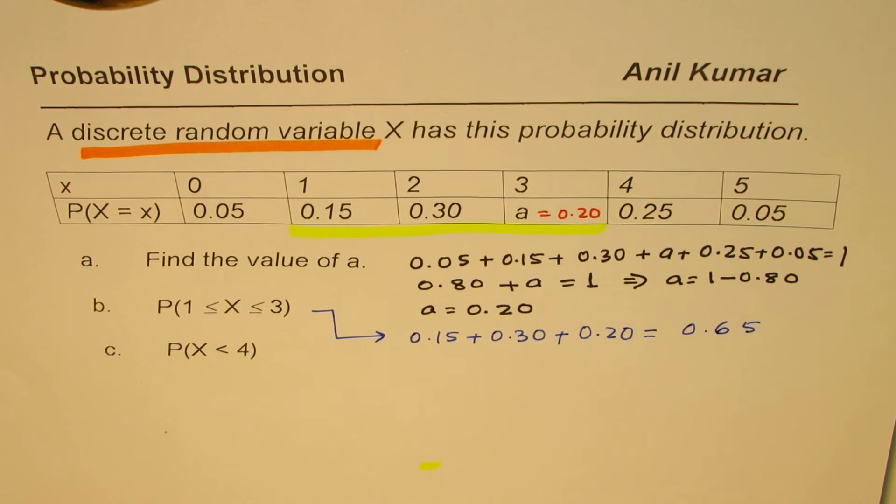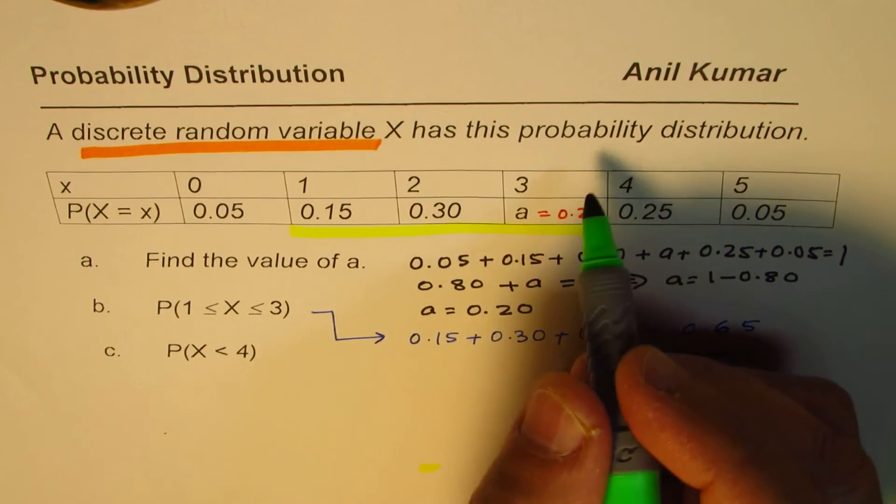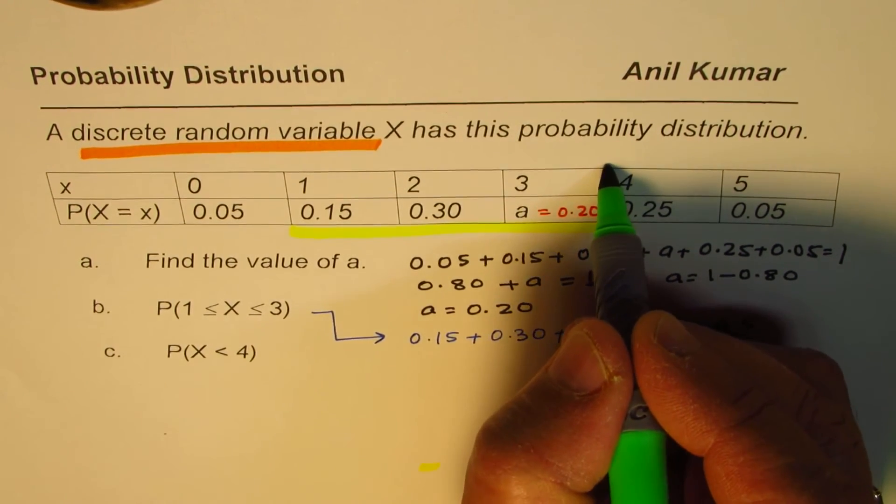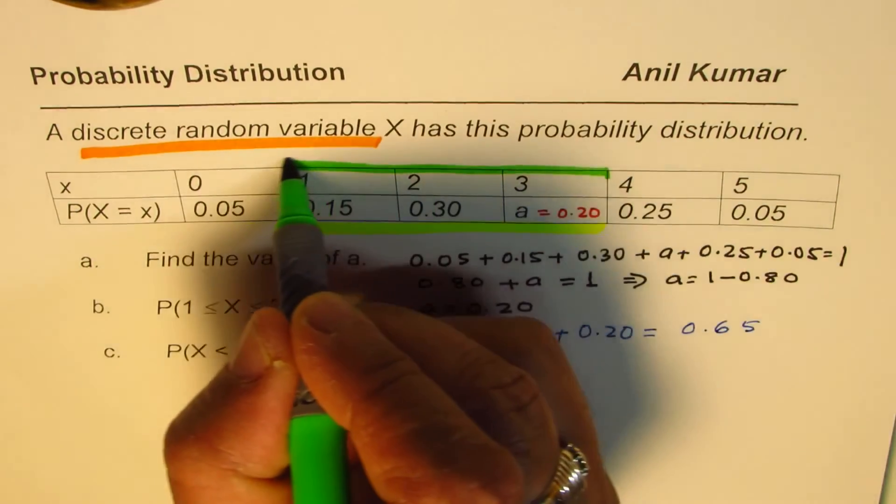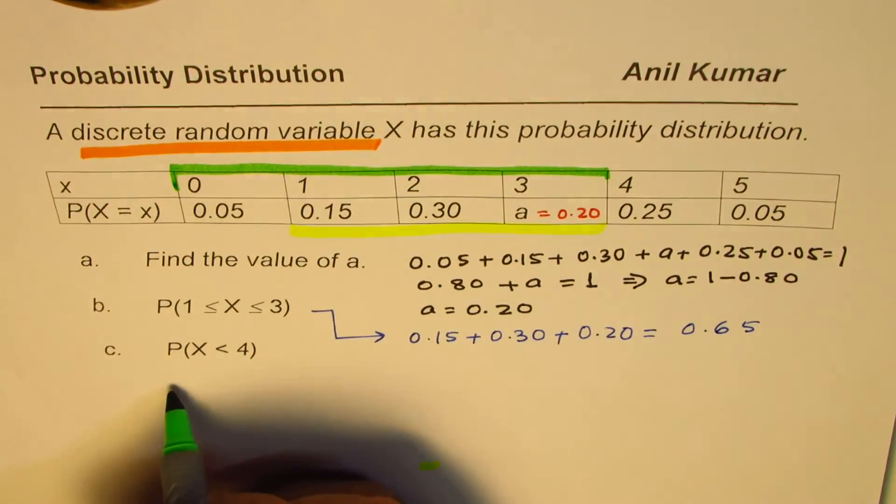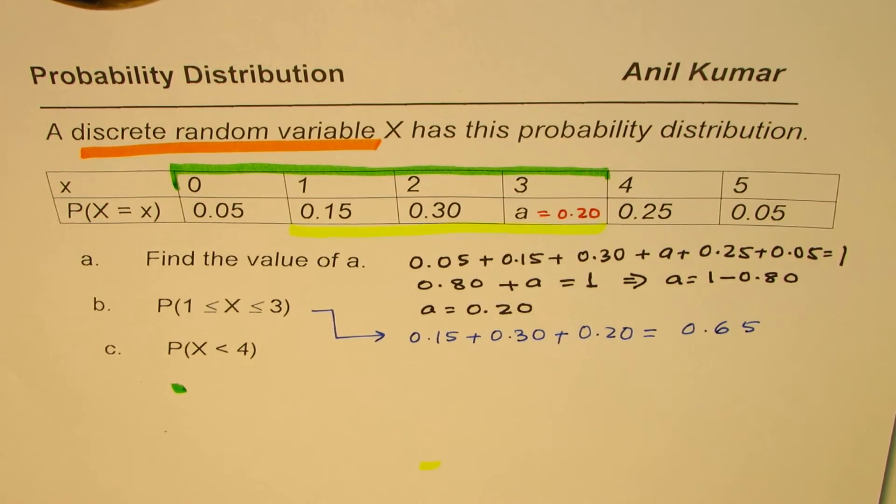So when we say less than 4, it means we are including all values left side of 4. We have to include 0 also. So that is what we are doing.